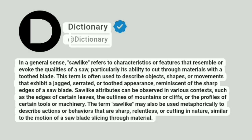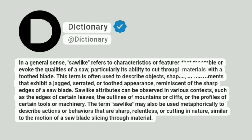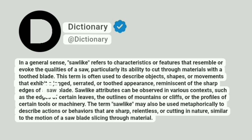Dictionary. In a general sense, saw-like refers to characteristics or features that resemble or evoke the qualities of a saw, particularly its ability to cut through materials with a toothed blade. This term is often used to describe objects, shapes, or movements that exhibit a jagged, serrated, or toothed appearance, reminiscent of the sharp edges of a saw blade.